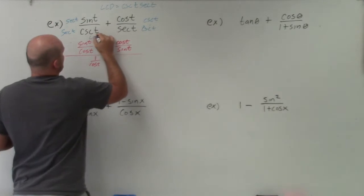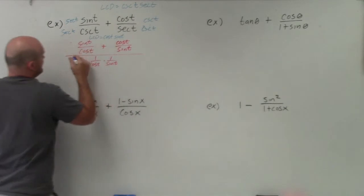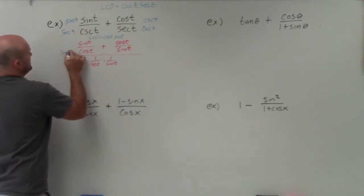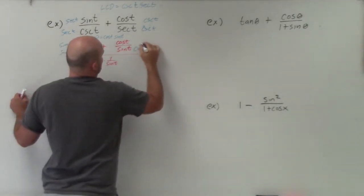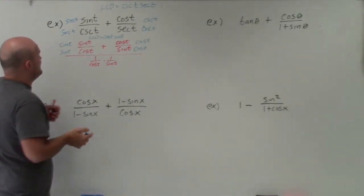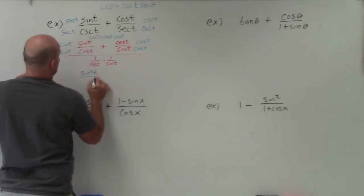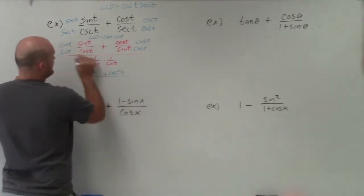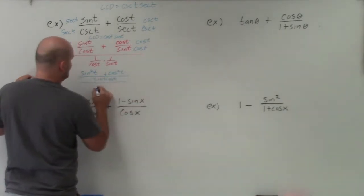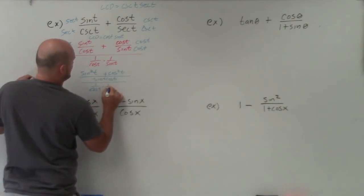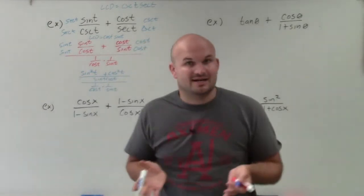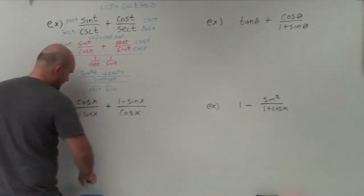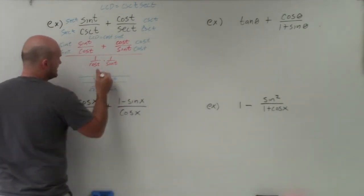The LCD is cosine of t times sine of t. So I'll multiply by sine of t over sine of t on the first term and cosine of t over cosine of t on the second. By doing this, I get sine squared of t plus cosine squared of t over sine of t cosine of t — all still divided by 1 over cosine of t times 1 over sine of t. Now, using our Pythagorean identity, sine squared of t plus cosine squared of t equals 1, so I'll replace that with 1.